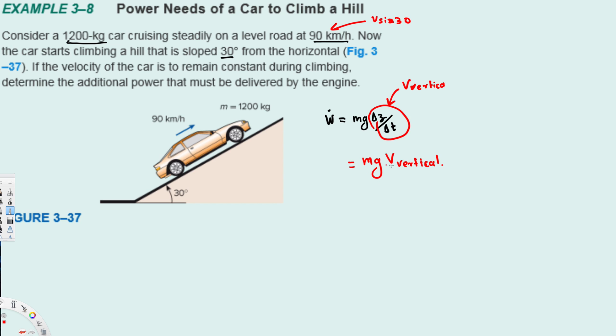If you calculate this, let's plug all the values. That's going to be 1200 kilograms times acceleration due to gravity, 9.81 meters per second squared, times v vertical, which is 90 kilometers per hour times sine 30.